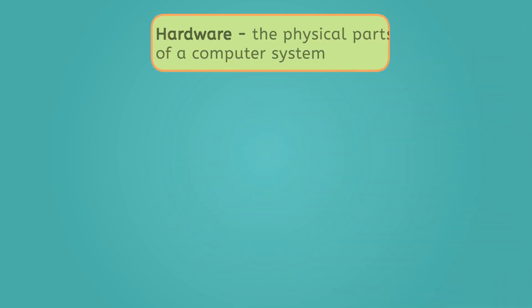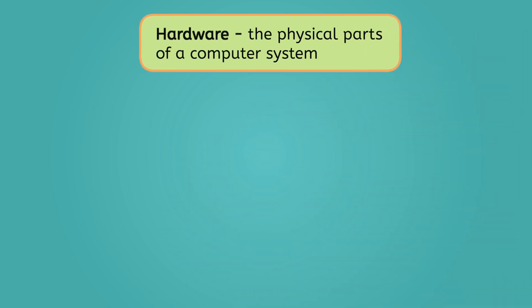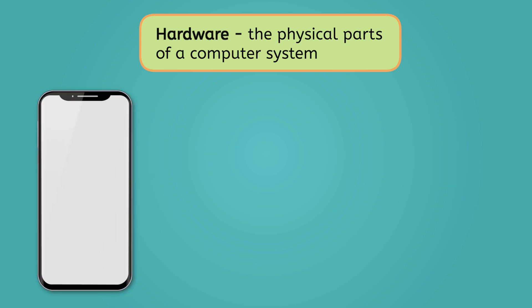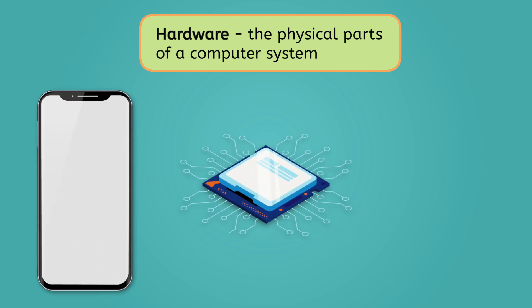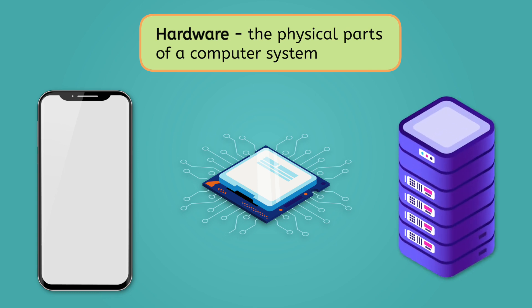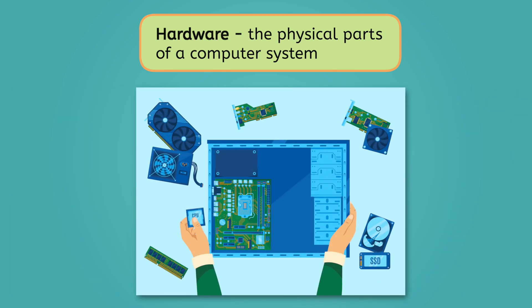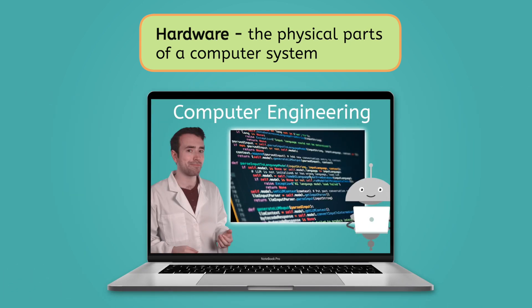Once they've designed the system, the next step for the computer engineer is to develop it. This involves creating two key components: hardware and software. Hardware is all the physical parts of a computer system. For our directions app, the hardware includes the phone it will be displayed on, the GPS receiver in the phone that takes in the information, and the servers that store all the map data. These are the physical components needed for the app to function. Some computer engineers build hardware, putting together the pieces to make computers and other devices, and some utilize hardware that already exists. Look at the device you're currently using — what types of hardware does it have?